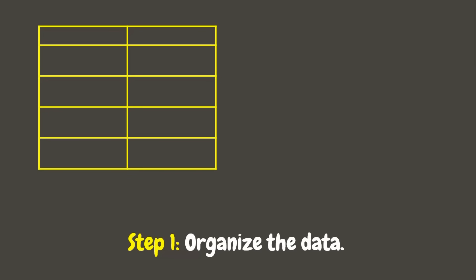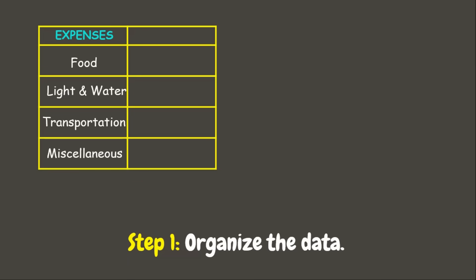From the problem, Santa's family would want to make a pie graph of their weekly expenses. For our first column, we are going to list all the expenses: food, light and water, transportation, and miscellaneous. For the next column, let's put the corresponding amount spent — 1,500 pesos for food, 600 pesos for light and water, 300 pesos for transportation, and 600 pesos for miscellaneous.